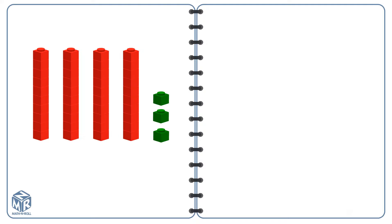Let's try another example. What number does the model show? We have four 10s and three 1s. We can write four 10s and three 1s as 43.